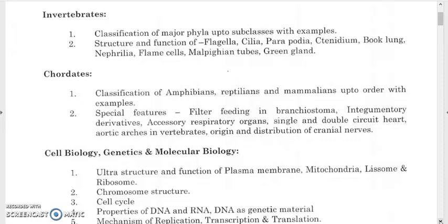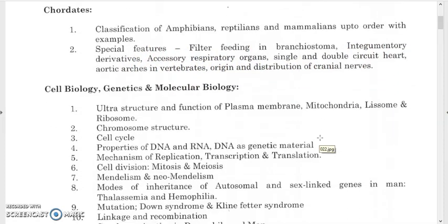Special features include filter feeding in Balanoglossus, integumentary derivatives, accessory respiratory organs, single and double circuit heart, aortic arches, invertebrate origin, and distribution of cranial nerves. For cell biology, genetics, and molecular biology, you must study the ultrastructure and function of the plasma membrane, including the fluid mosaic model and the different parts and functions of the plasma membrane.